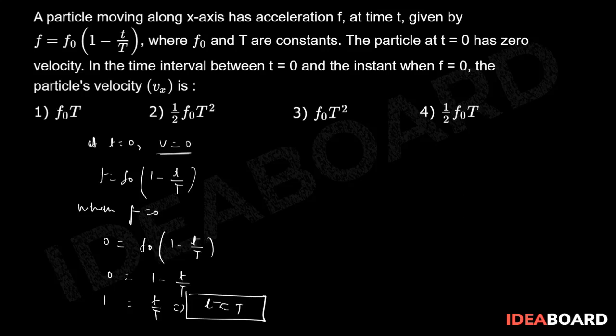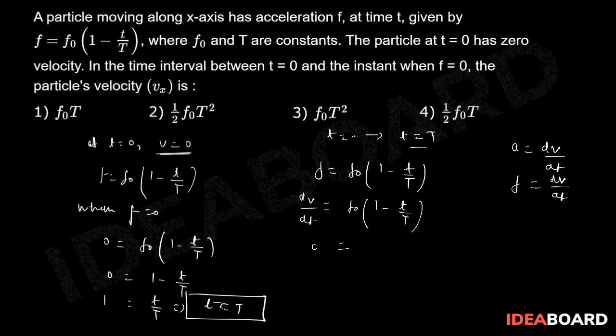We need to find the particle's velocity when time limits are t equals 0 to t equals capital T. The function is given to be f equals f₀(1 minus t by T). We can utilize this: we know that acceleration a is given by dv upon dt. So here, f equals dv upon dt. This will be replaced: dv upon dt equals f₀(1 minus t by T). Now dv equals f₀ into (1 minus t upon T) dt.